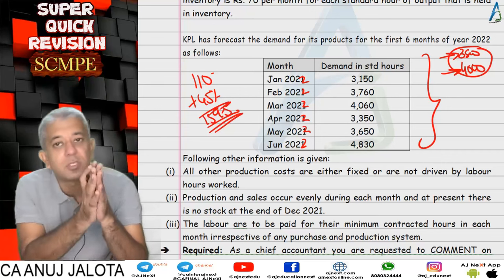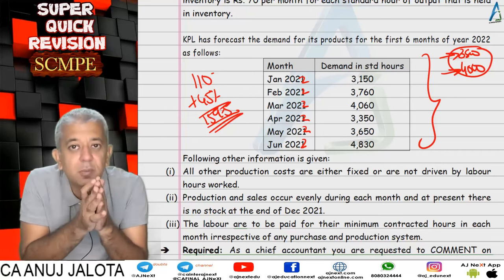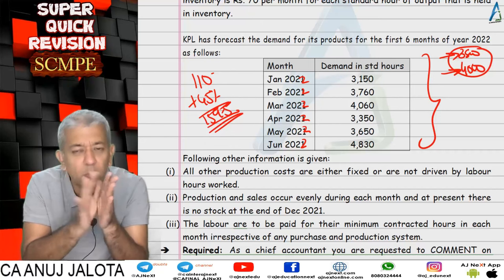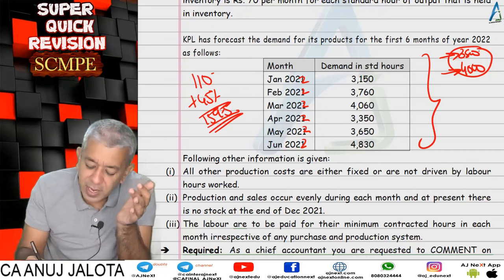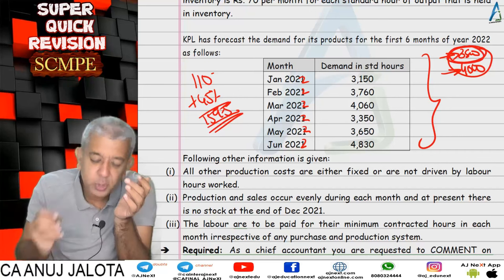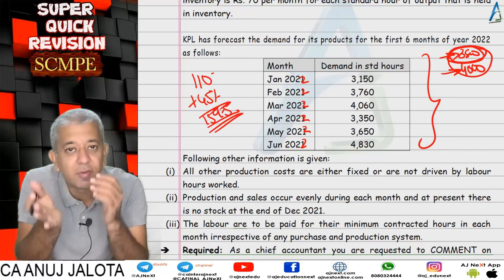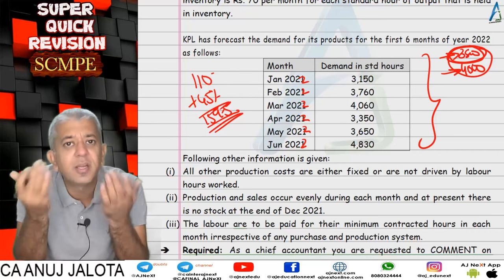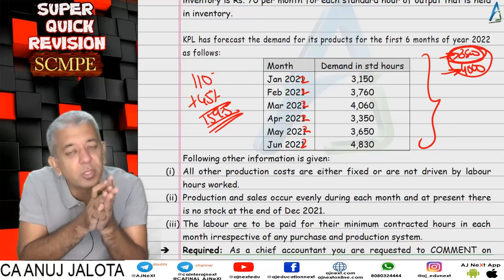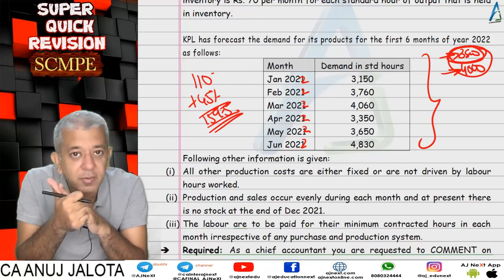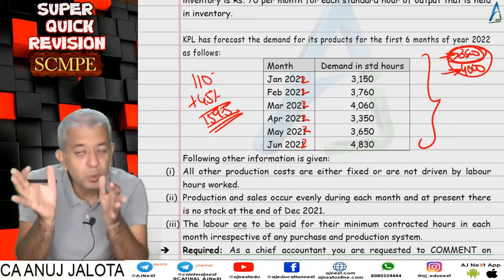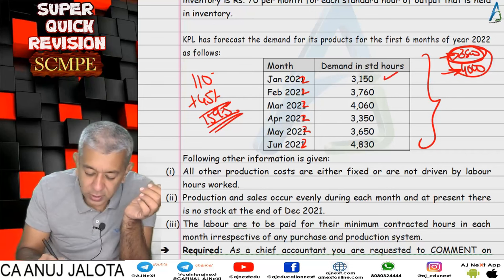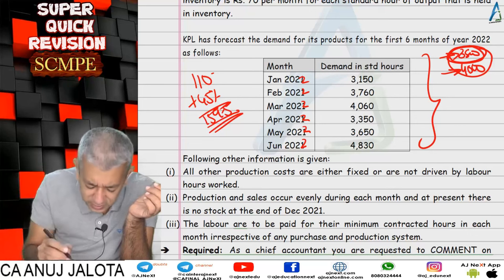Under the push system, the company manufactures a fixed amount irrespective of demand. If more is made than demanded, stock is carried forward — useful in months when demand is high, so overtime is avoided. Under the push system, we manufacture to the extent of 3,800 standard hours every period.